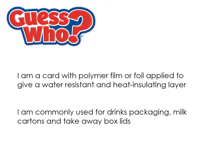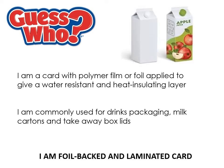Foil-backed card has a polymer film or foil applied on the inside, giving it a water-resistant or heat-insulating layer. You'll see it on things like Tropicana orange juice containers, milk cartons, and takeaway box lids that have a foil lining inside. However, a major environmental drawback is that because it has two materials laminated together, they cannot be easily separated and therefore cannot be easily recycled.